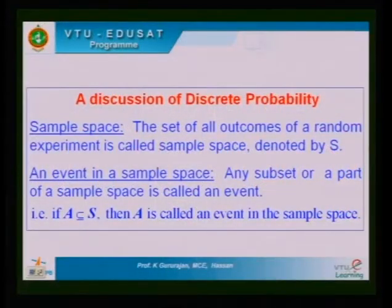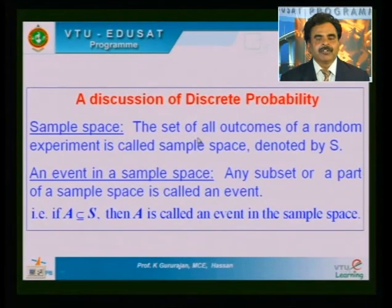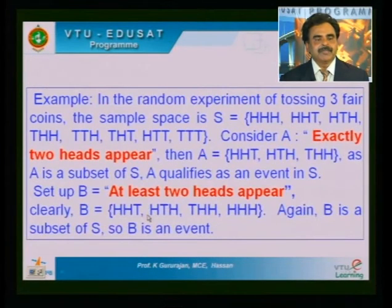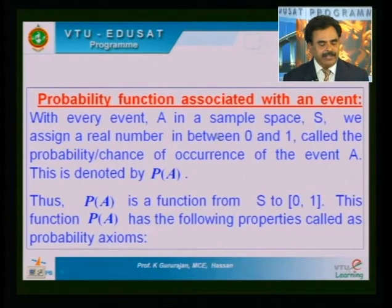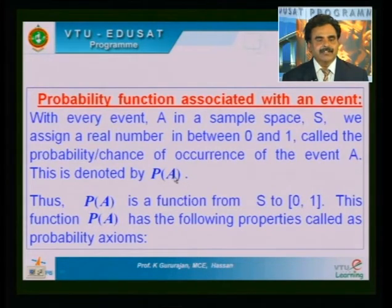Generally, whenever we conduct an experiment, we note down all the outcomes in a set — this we call the sample space. Sample space contains all the outcomes of the experiment; it is denoted by S. Any subset of the sample space is called an event. With respect to every event occurring in the sample space, we assign a number between 0 and 1. This is called the probability of occurrence of event A. P(A) means the chance of occurrence of event A in the sample space.